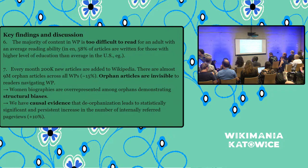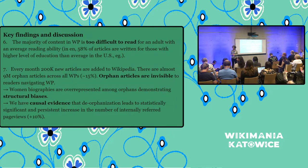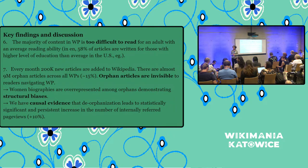Thank you very much for the discussion. You mentioned that the vast majority of articles are intended for people with higher levels of education. A partial solution would be the Simple English Wikipedia, which is the only exception that doesn't have a separate ISO code. Would it be a viable idea to create either separate subdomains for simple projects — like simple German, simple French — or parts of these projects intended for people with lower levels of education or lower capacity for processing the information?